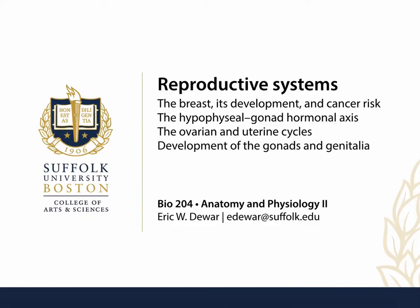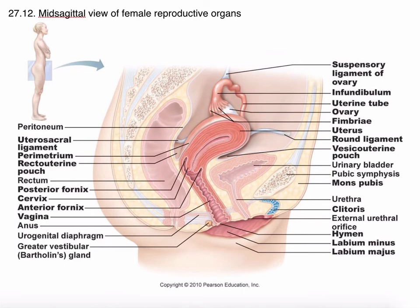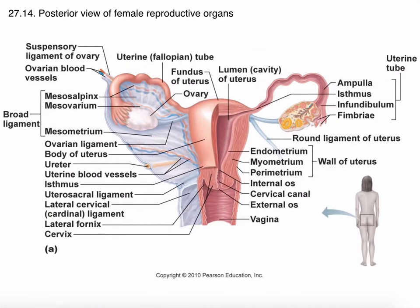For this part of the reproductive systems chapter, I want to talk about the system as it is in women. You're familiar with the morphology already. A couple of things that are tricky to see in 2D, but not so bad on the actual models, is the organization of the ligaments, like your utero-sacral ligament, the round ligament, and the suspensory ligament of the ovary. It's both those cord-like ligaments as well as the broad ligament, this peritoneal extension, that holds everything in place.